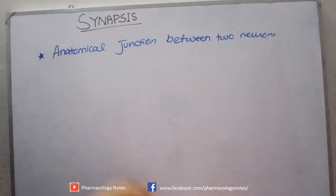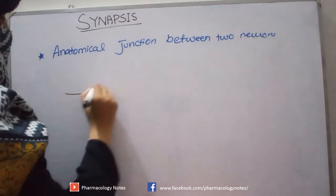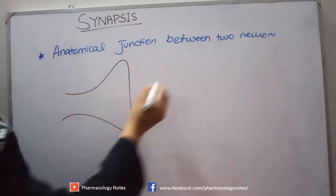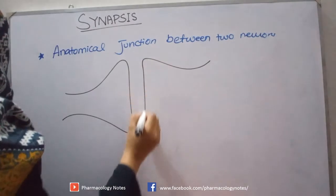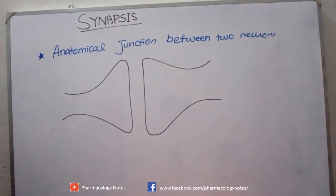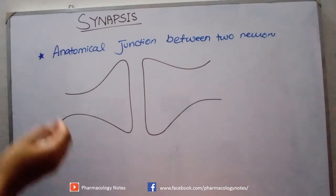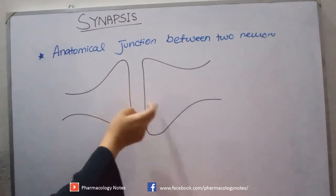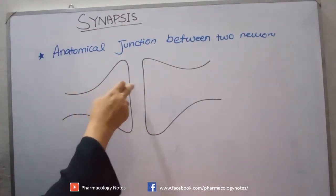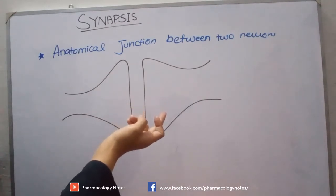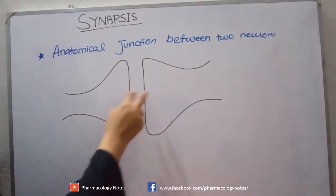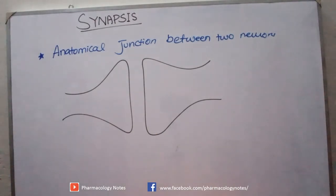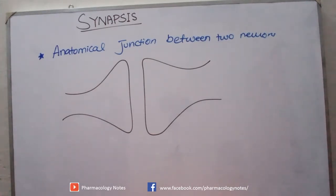As we all know, neurons are separate anatomical entities and they are not connected to one another. For connection, for communication, to send signals, they need communication across a gap. There is mostly a release of chemicals, or there could be electrical signals, which help them to communicate with one another. So any anatomical junction between two neurons — neuron to neuron or neuron to effectors — is termed as a synapse.